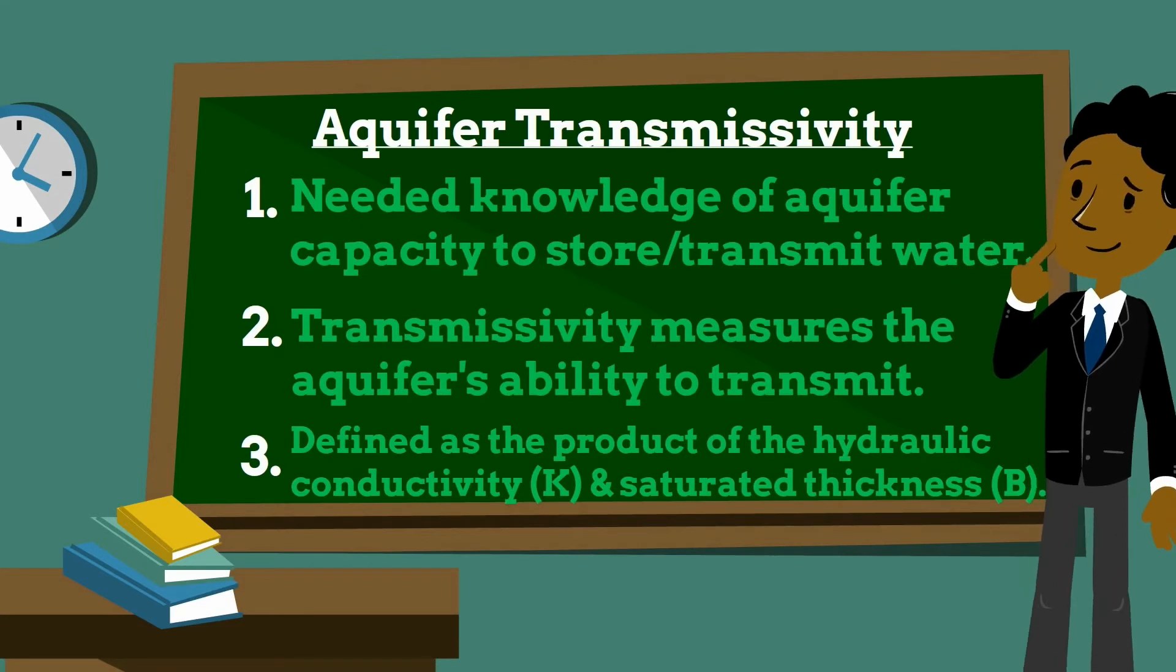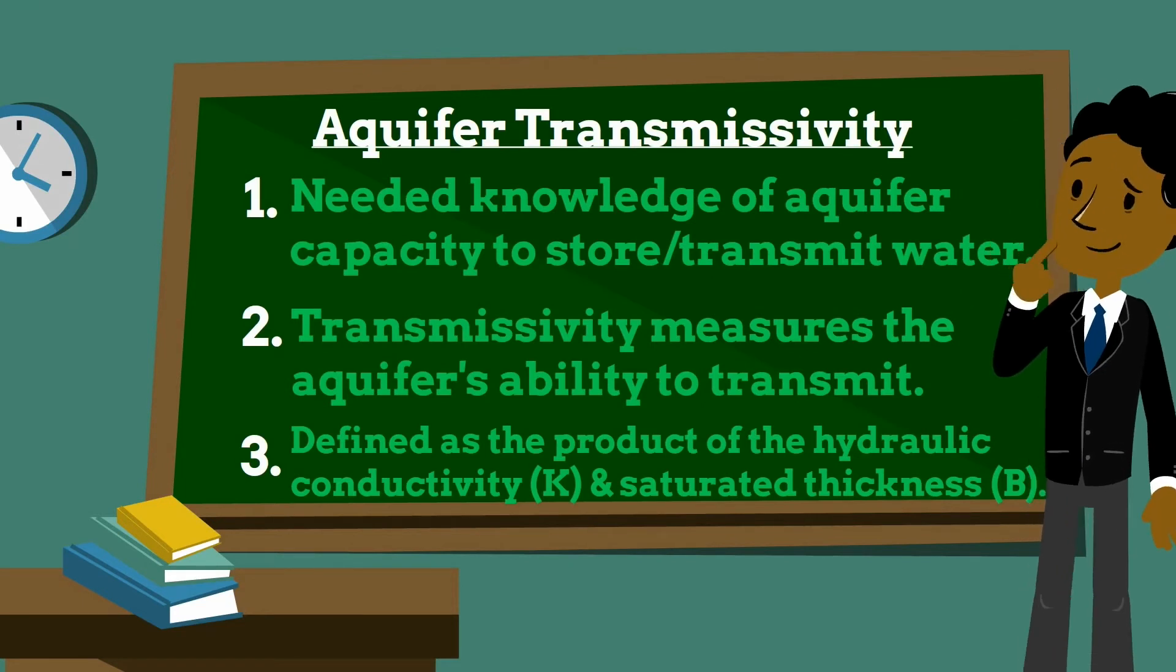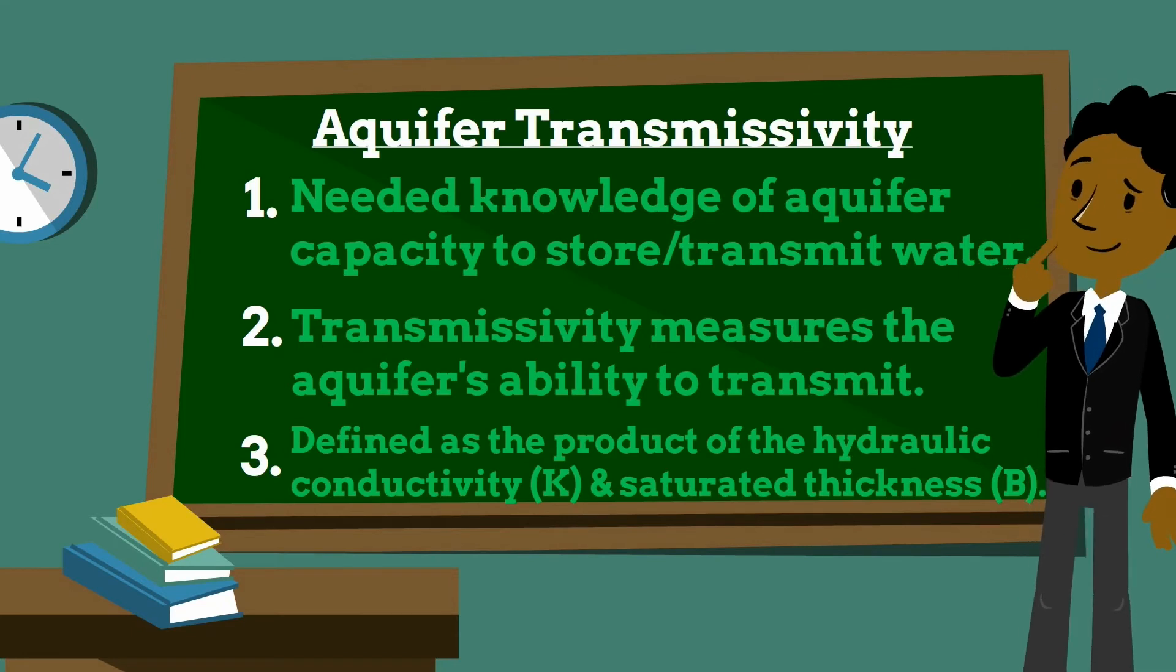It is defined as the product of the hydraulic conductivity, K, and the saturated thickness, B, in the direction normal to the base of the aquifer. Therefore, T equals K times B.